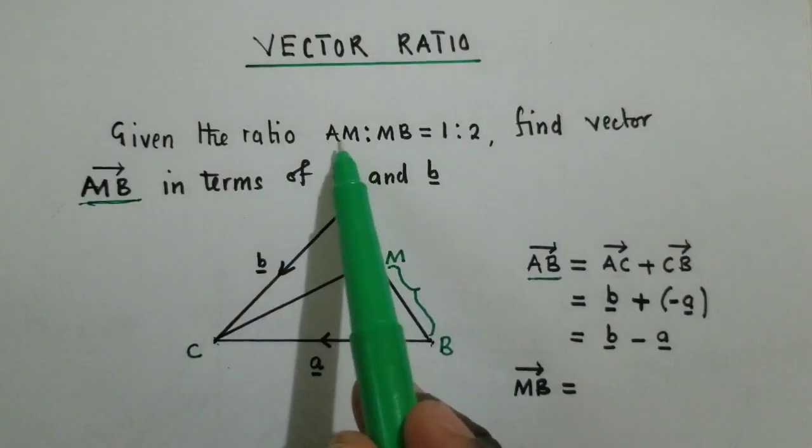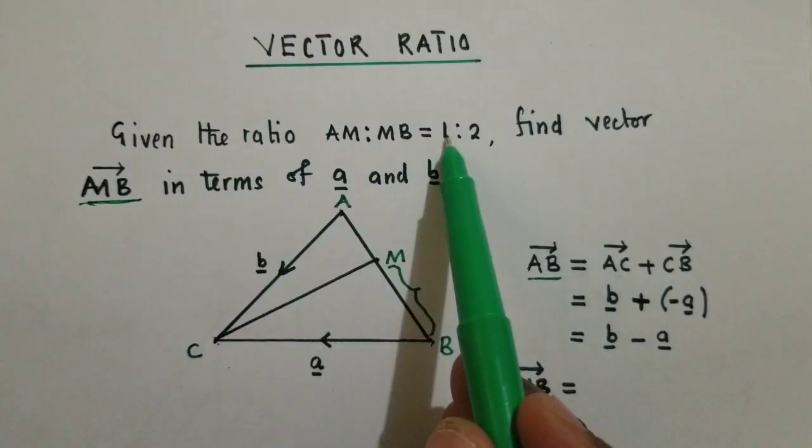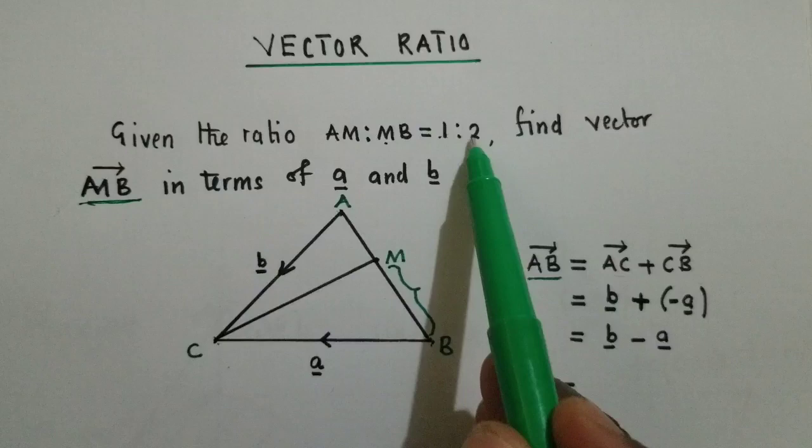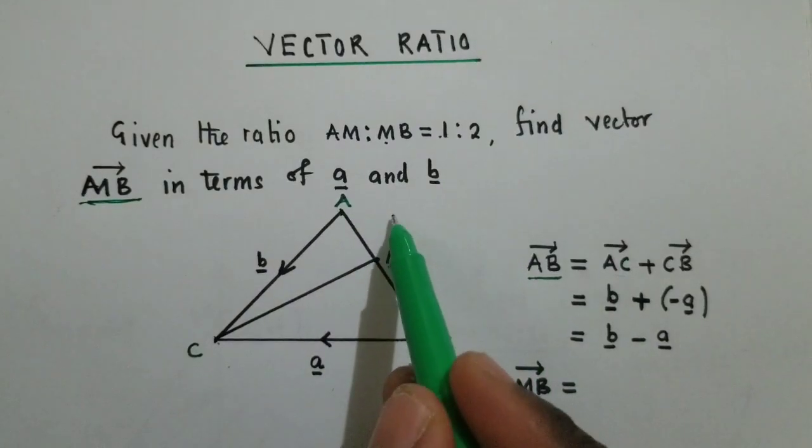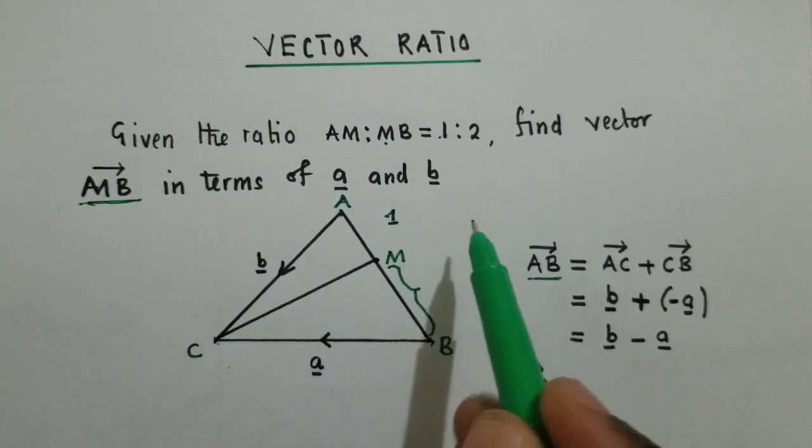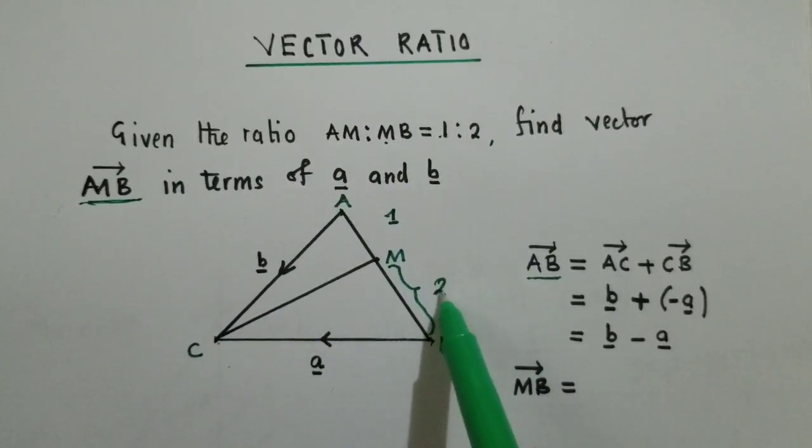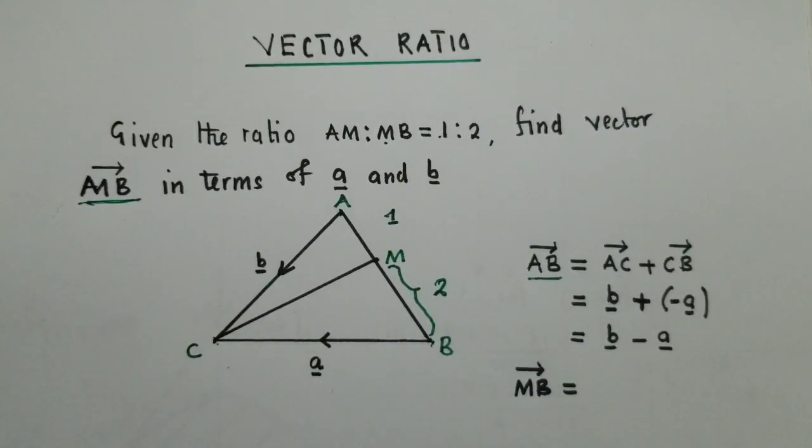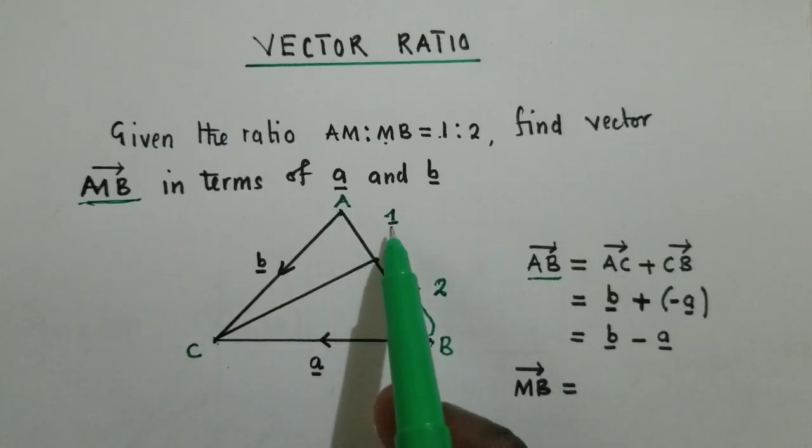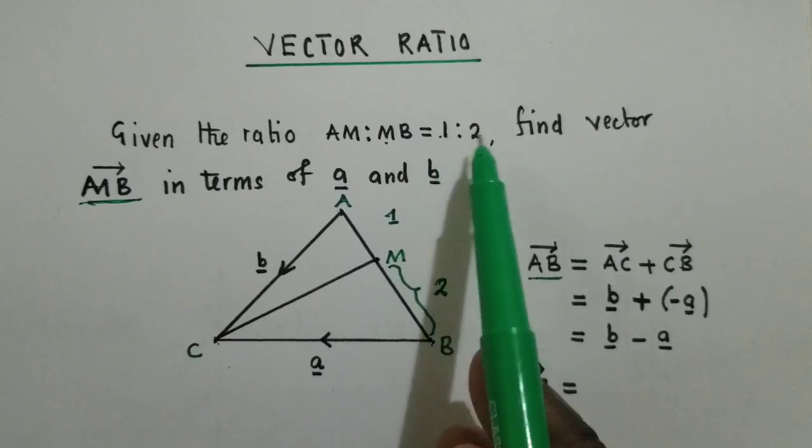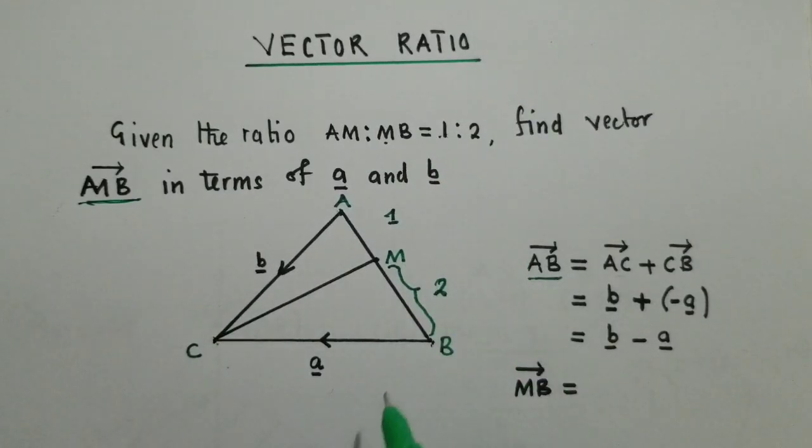So AM is 1, MB is 2. You write your 1 here, and MB is 2, you write your 2 here. This is what you're looking for. So what you're going to do next is add this ratio. So 1 plus 2 will give us 3.